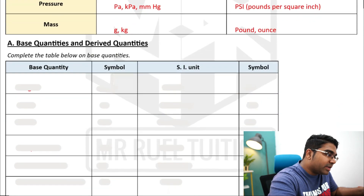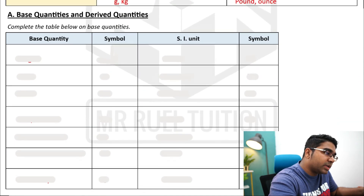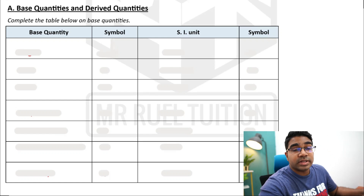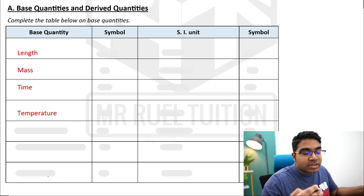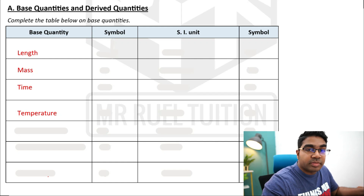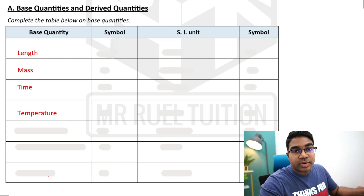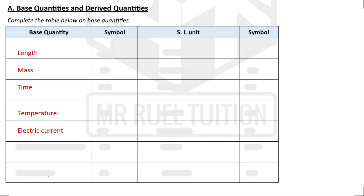There are seven base quantities. Remember, base quantities are quantities that cannot be derived from other quantities. First we have length, then mass, then time and temperature — these are common things we measure in the laboratory. We also have electric current, and then amount of substance. Those of you studying chemistry will understand amount of substance, as well as luminosity.